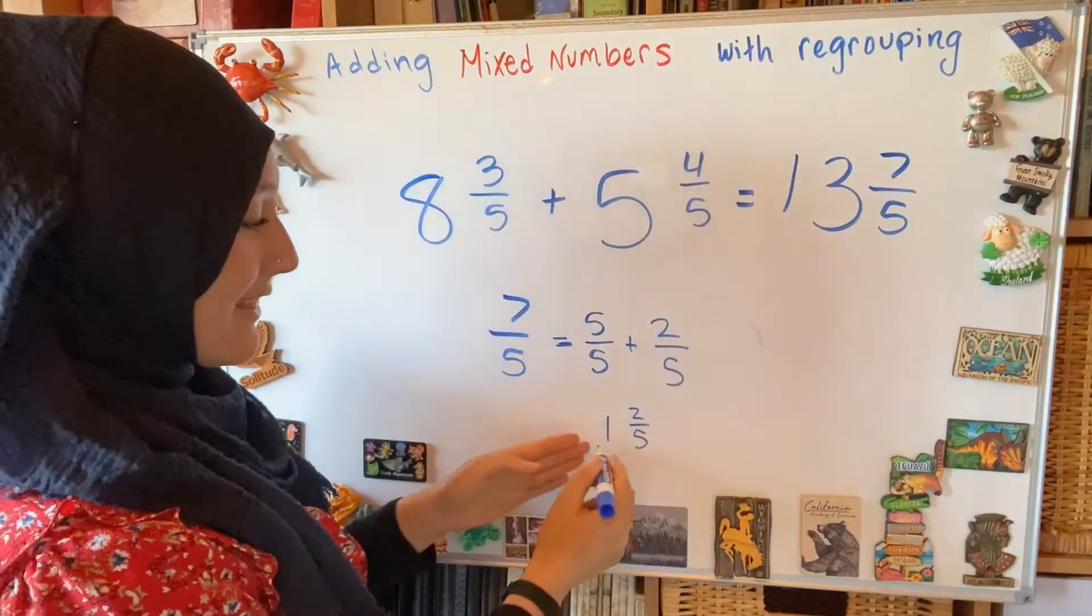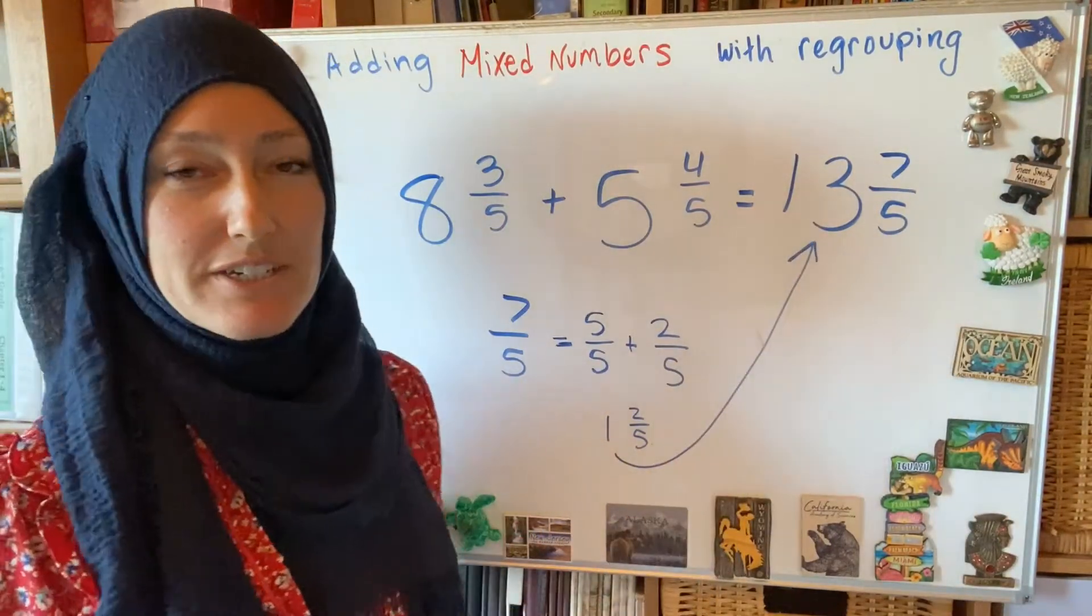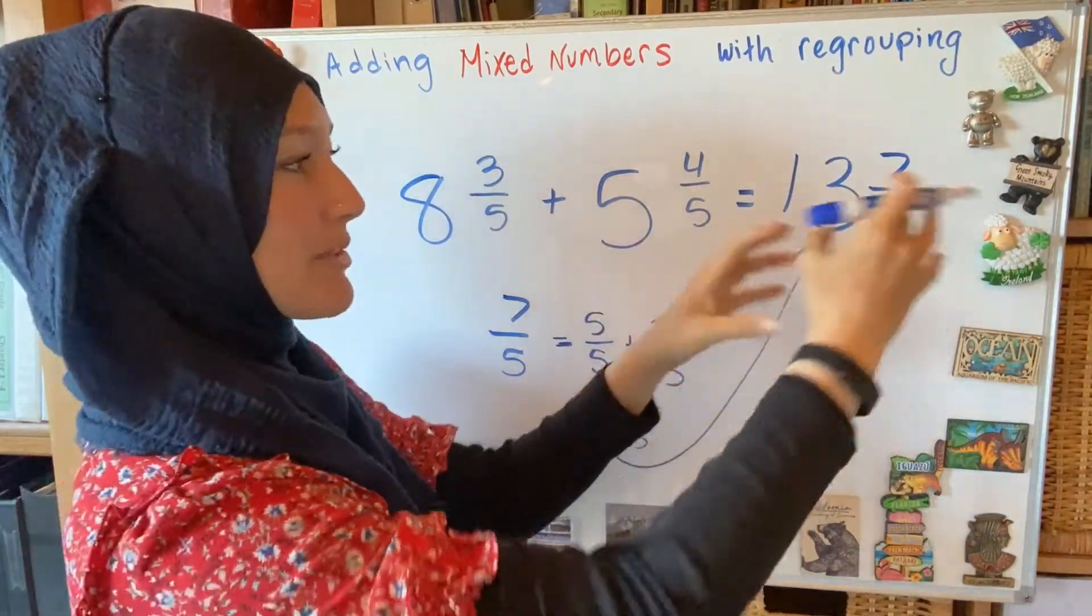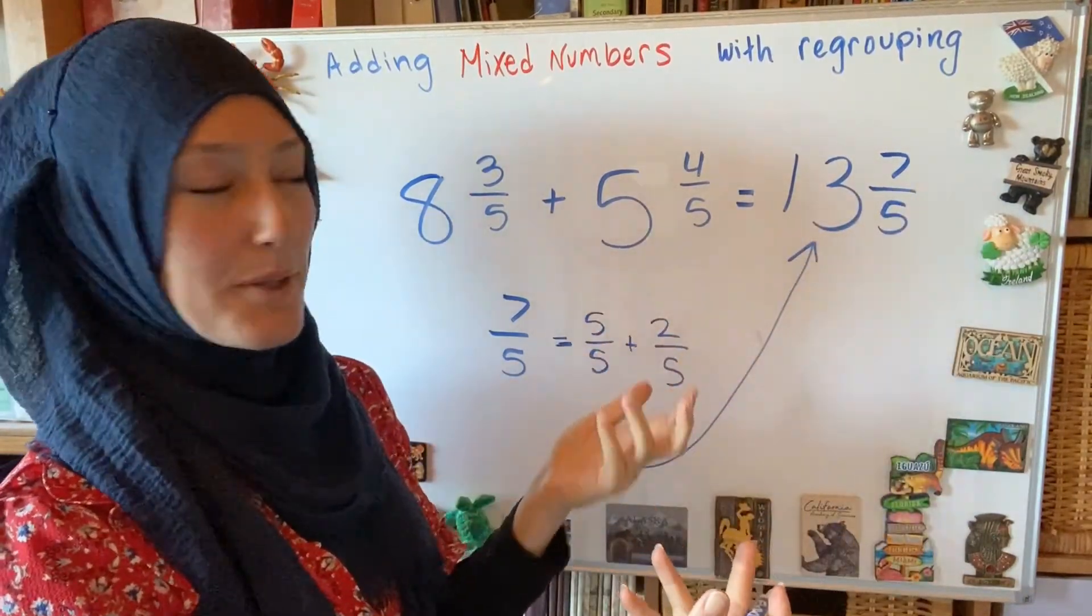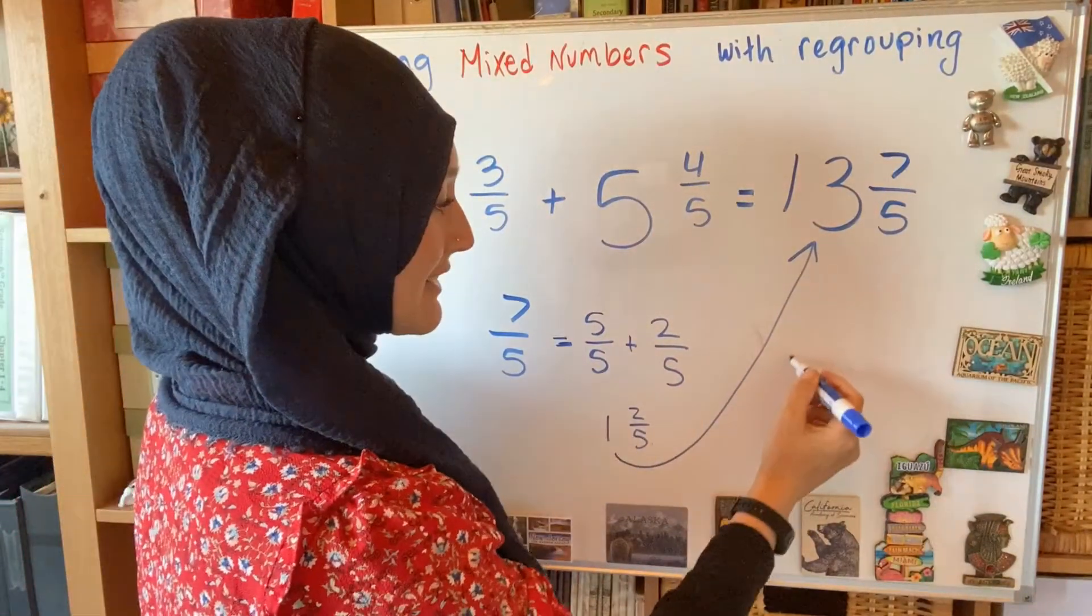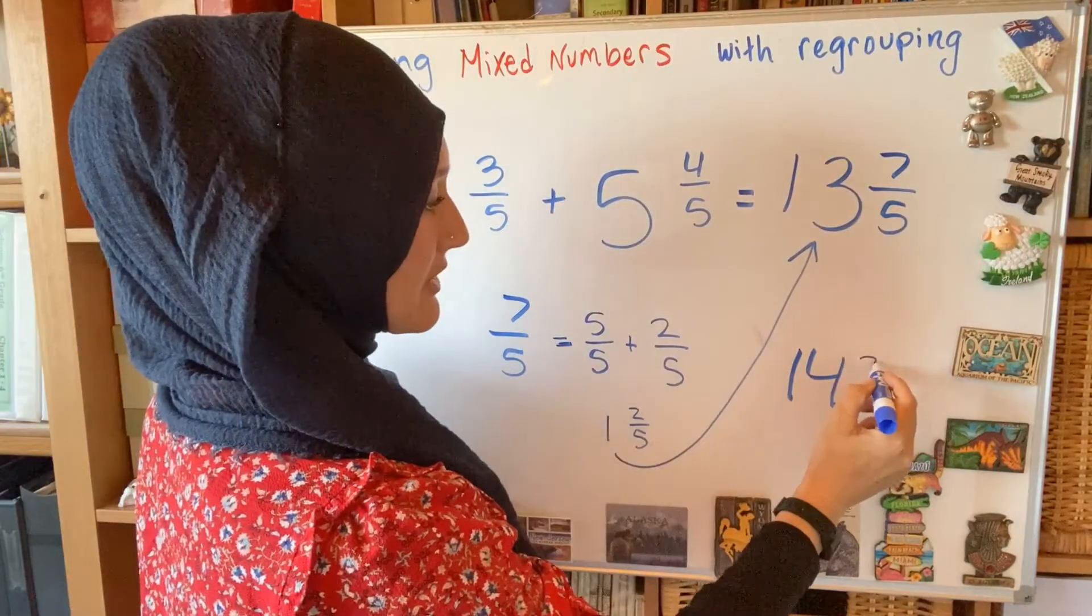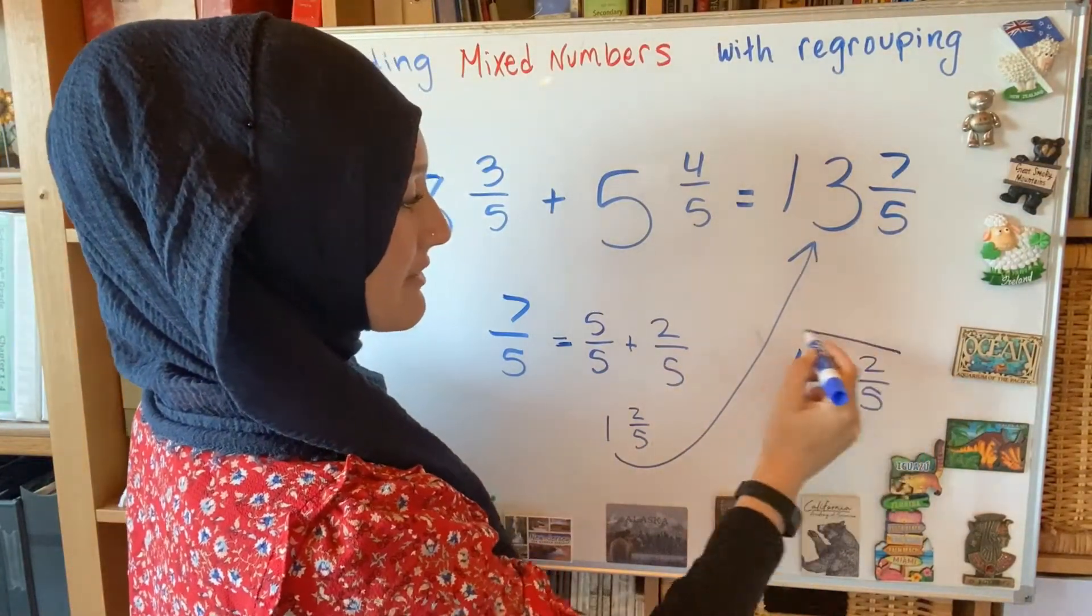So then I take this one and I give it to my whole number over here. That's kind of where the regrouping is happening, but it's going from the fraction back into the whole number. So now my final answer will be 14 and this leftover amount, which is 2 fifths.